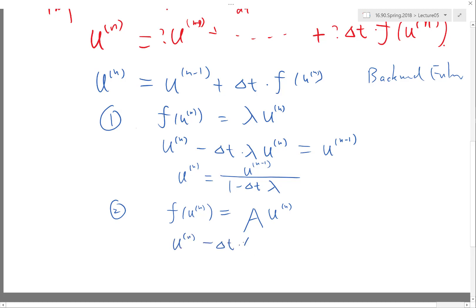You just need to instead of dividing by a number, you need to invert a matrix. If you know how to invert a matrix, that's fine. So what you get is u^n - Δt times A of u^n equal to u^(n-1). You have to construct this identity minus Δt times A and backslash it with respect to u^(n-1).